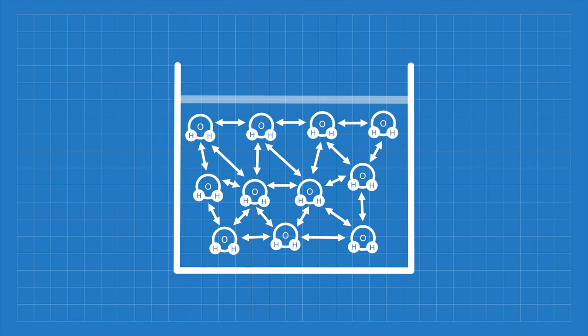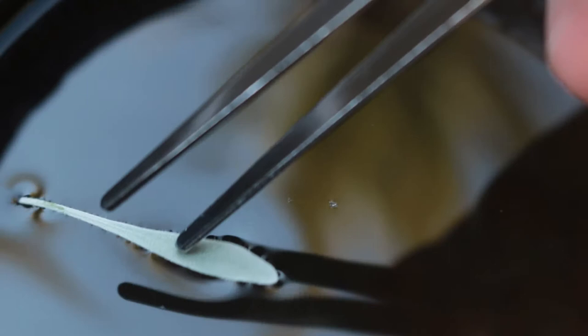But since there are no water molecules above the surface, all the molecules end up being pulled downward. Because of this, the molecules closer to the surface are held tighter together. This creates what we call surface tension.